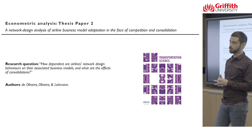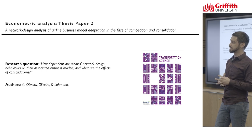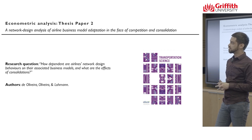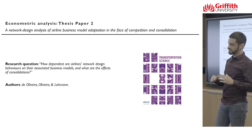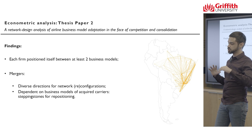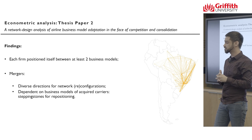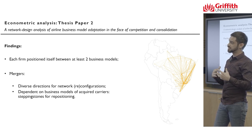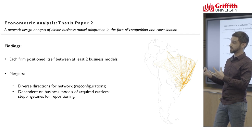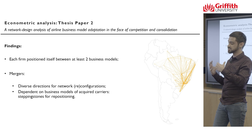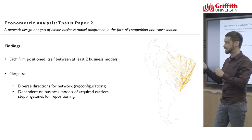Now I'm going to shift the focus to my work with econometrics. In this paper we delved into the connection between airline network design and airline business models, and how mergers can influence network design behaviors. We used discrete choice models and data from Brazil. We identified that as time goes by, airlines try to reposition themselves at the intersection of at least two business models concerning network configuration, and that mergers had very different effects on those repositionings depending on the business model of the company being acquired — serving as stepping stones for market repositions by the acquiring carrier.